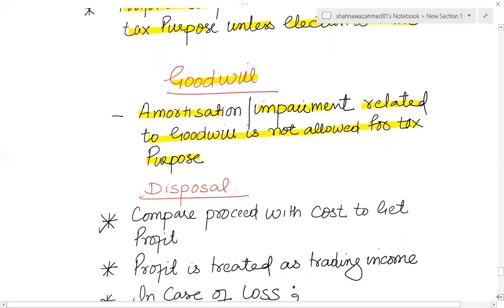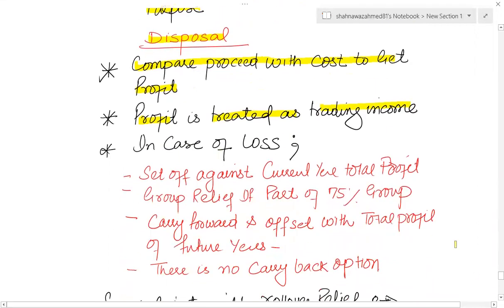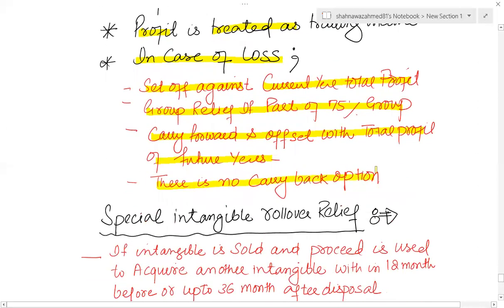As far as goodwill is concerned, amortization and impairment related to goodwill is not allowed for tax purposes — so any amount charged in the profit and loss account must be added back. On disposal, compare proceeds with the original cost to get a profit, and the profit on disposal of goodwill is treated as trading income. If there is a loss, it can be set off against current year total profits, or you can get group relief if the 75% criteria is satisfied, or offset against future total profits.